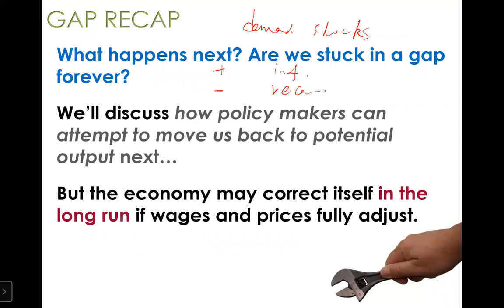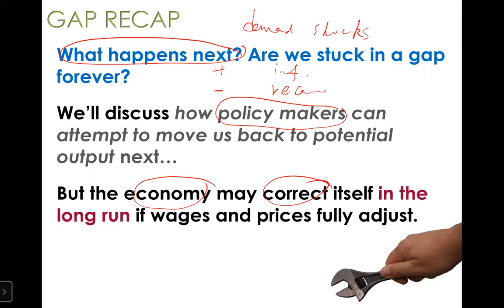Now the question is: what will happen next after a demand shock? If it is a positive demand shock, we have an inflationary gap; if it is a negative demand shock, we have a recessionary gap. Understanding what happens next has important implications for policymakers — basically the government and Congress — in choosing appropriate policy tools to help the economy. In general, the economy will adjust and correct itself in the long run, but as Keynes famously said, 'in the long run we are all dead,' so we focus on short-run adjustment.